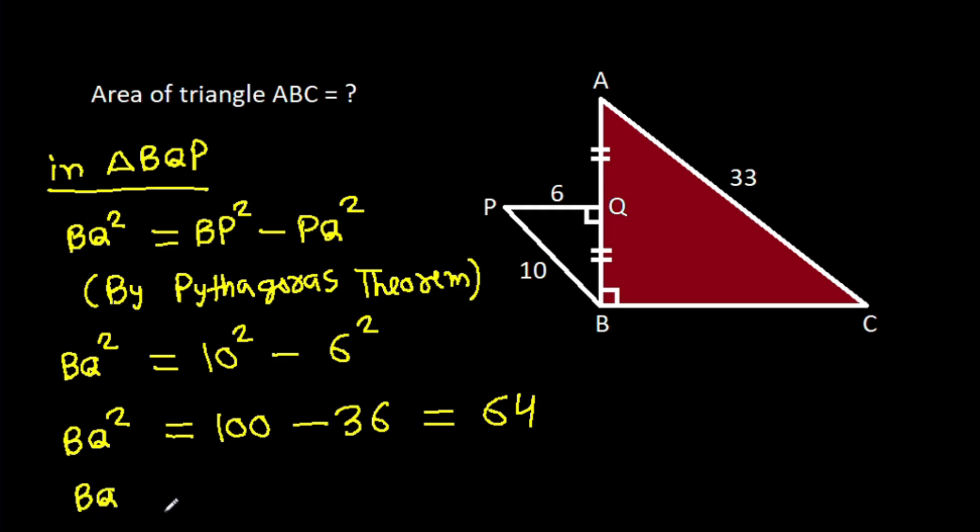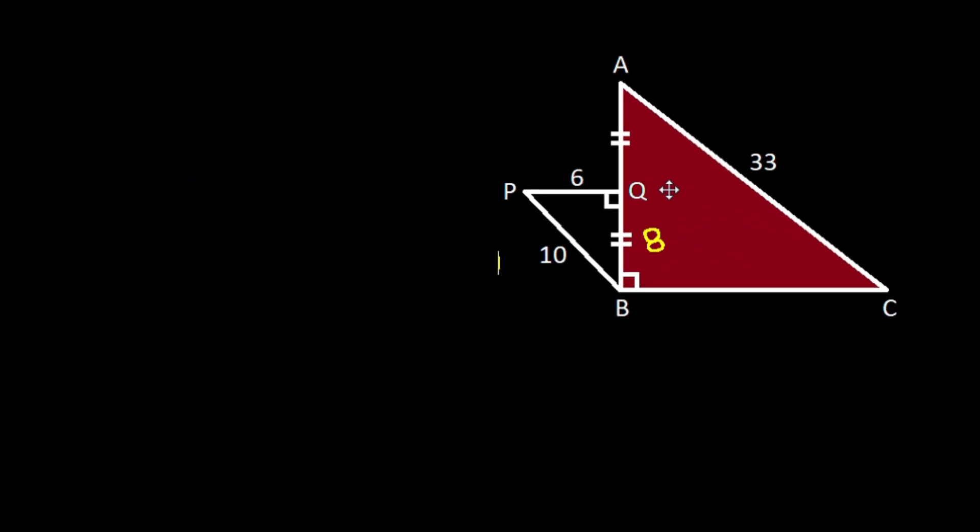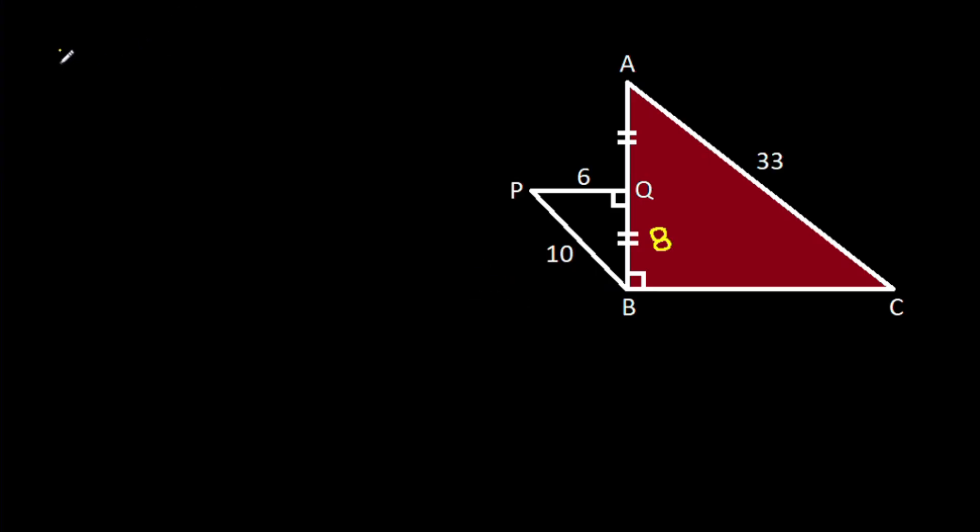So BQ will be root 64, that will be 8. So BQ is 8. And we have AQ is equal to BQ, that will be 8. So AQ is 8.